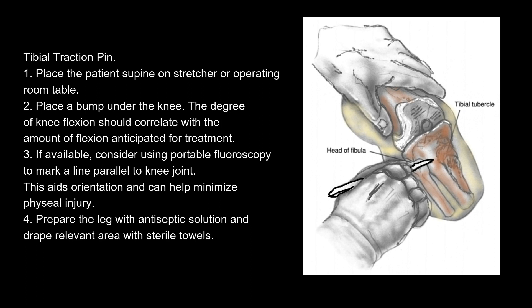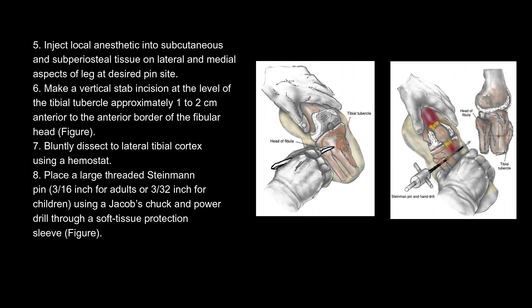Tibial traction pin technique: 1. Place the patient supine on a stretcher or operating room table. 2. Place a bump under the knee — the degree of knee flexion should correlate with the amount of flexion anticipated for treatment. 3. If available, consider using portable fluoroscopy to mark a line parallel to the knee joint to aid orientation and minimize physeal injury. 4. Prepare the leg with antiseptic solution and drape the relevant area with sterile towels. 5. Inject local anesthetic into subcutaneous and subperiosteal tissue on lateral and medial aspects of the leg at the desired pin site. 6. Make a vertical stab incision at the level of the tibial tubercle, approximately 1-2 cm anterior to the anterior border of the fibular head.